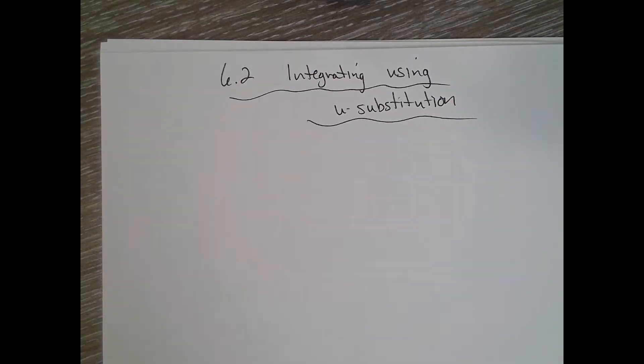All right, so 6.2 integrating using u-substitution. 6.1 you had a bunch of integrals, you had slope fields, but really other than the power rule, you really haven't found a systematic way to find anti-derivatives.